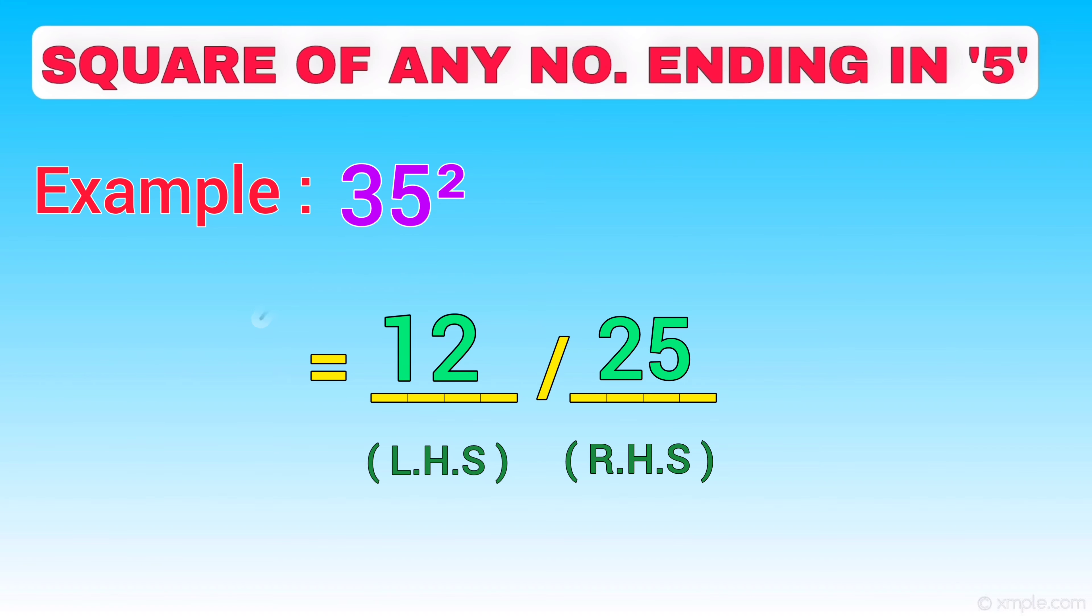On combining the left part and the right part, we get the answer of 35 square as 1225.